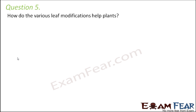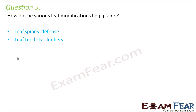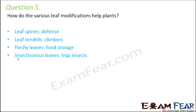Question 5: How do the various leaf modifications help plants? Leaf spines help in defense — for example, cactus. Leaf tendrils help in climbing; climbers use flexible, soft leaves to climb around neighboring objects, providing mechanical support to the plant. Fleshy leaves like onion help in food storage. Insectivorous leaves help in trapping insects — for example, the pitcher plant, whose leaves get modified into the shape of a pitcher to catch insects and provide food to the plant.